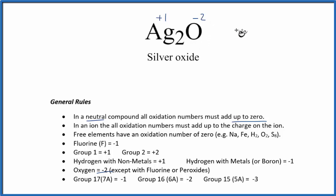One times minus two, that's minus two, and then two times the plus one, that's plus two. So these two numbers cancel out. They give us zero, what we said because this is a neutral compound.